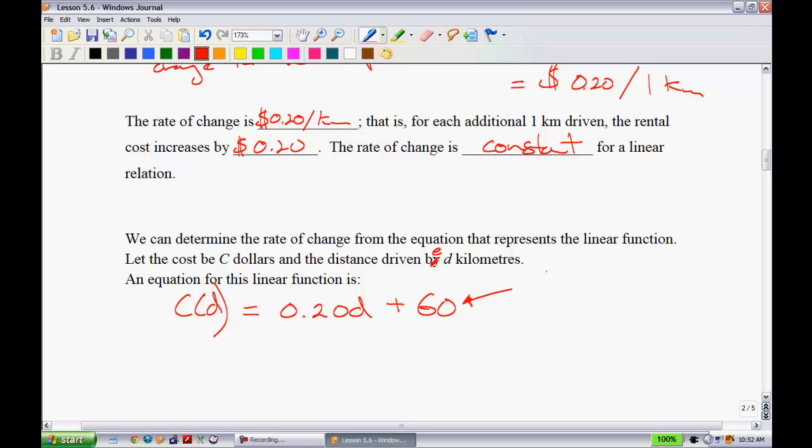Now that we have everything here, let's label each one of these things. So 60 represents your initial cost. Remember, it didn't matter how far you drove, no matter what, they were going to charge you 60 dollars for the rental car. The 0.2 or 0.20 here is the rate of change. That's how much they're going to cost you every kilometer that you drive. And d is our independent variable. And c(d), or just c, is your dependent variable.